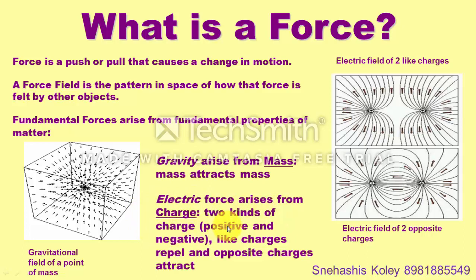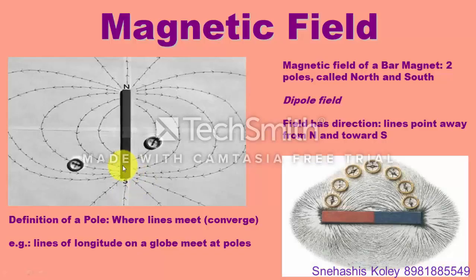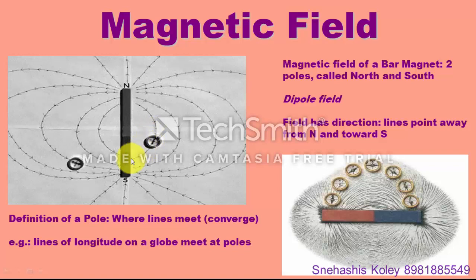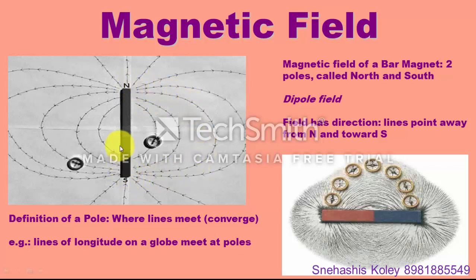There are two kinds of charge: positive and negative. Same charges repel each other and opposite charges attract each other. Similarly, a magnet has two poles: north pole and south pole. Magnetic field lines, which are imaginary lines showing the direction the force will act, always point from north pole to south pole outside the bar magnet, and from south pole to north pole inside the magnet. So all magnetic field lines form closed loops.